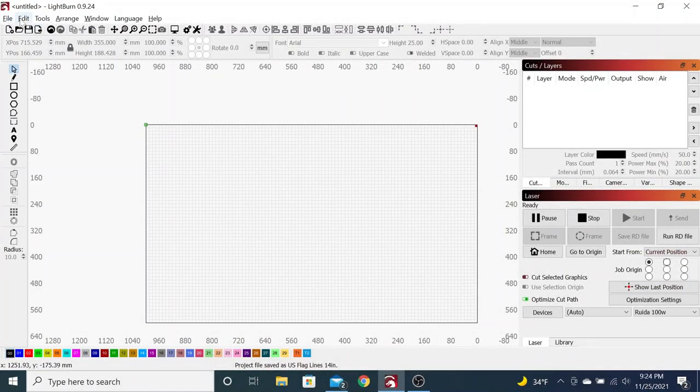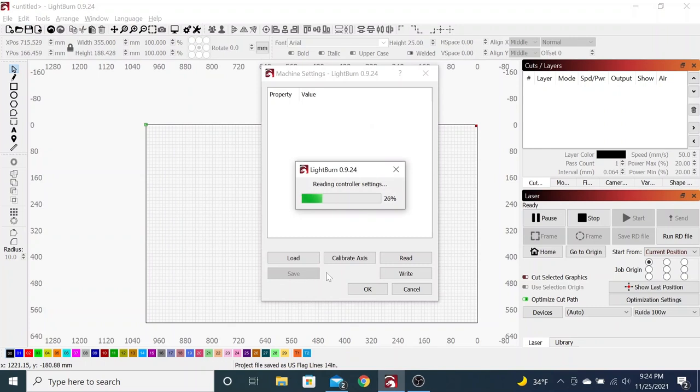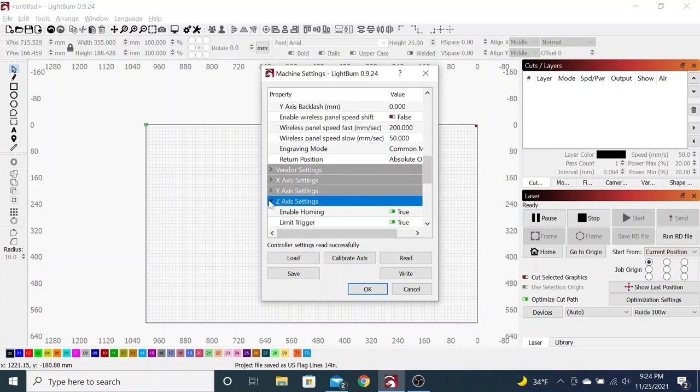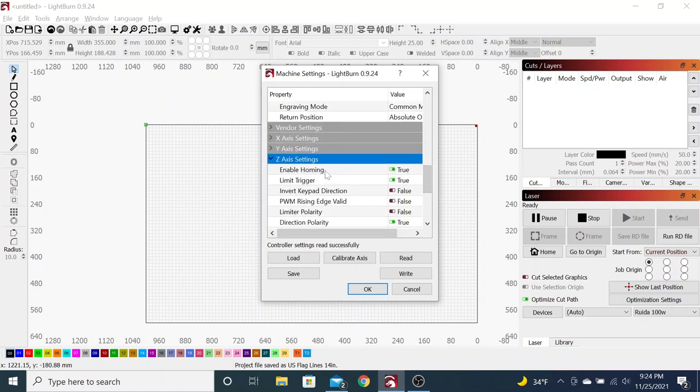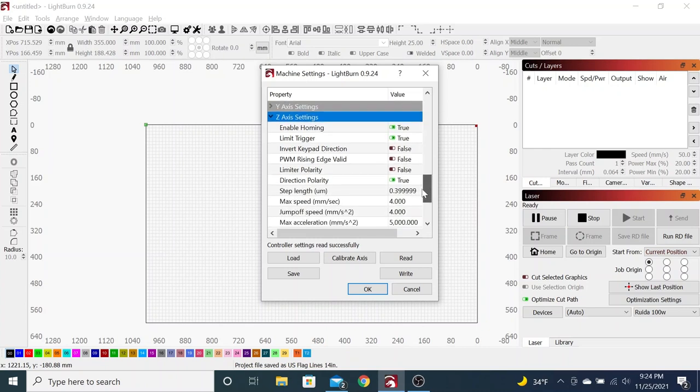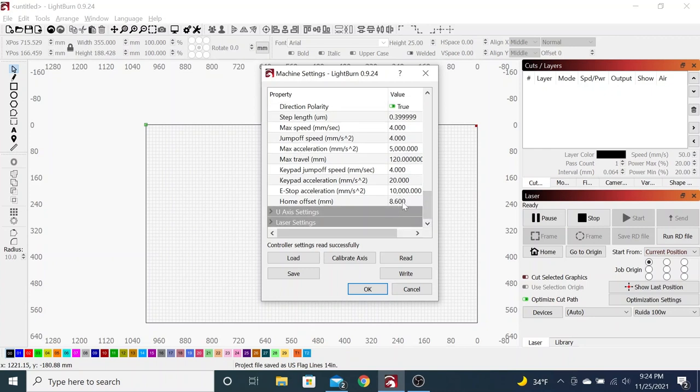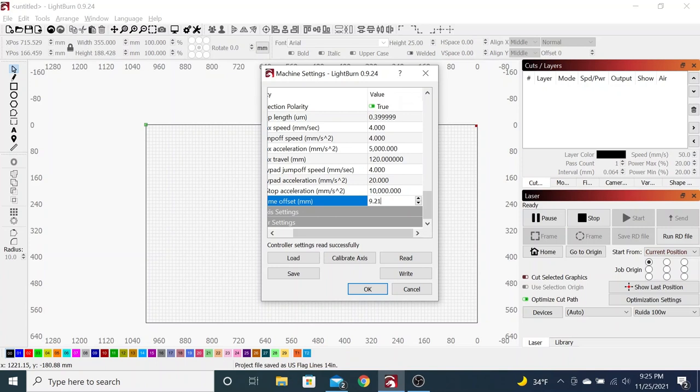So now over here in Lightburn, I'm connected to the laser. You can see over here it says laser ready. You need to be connected so that you can get to the machine settings. We're going to go to Edit, Machine Settings, let that load up. And then we're coming all the way down to Z axis right here. So the enable homing is on, the limit triggers on, that's all stuff that has to do with actually letting the autofocus work. What you want to come down to is the home offset, this right here. So right now it's set to 8.6. We're going to make it 9.21 because that is what the measurement of my scrap material was. And then we're going to say write, and it says successfully written.